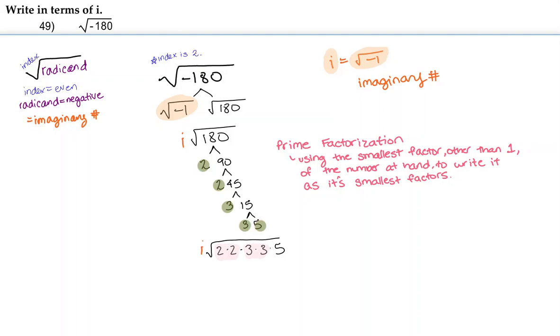We're going to take out a 2, and then we're going to take out a 3, and then we're left inside of the square root of 5. And then we're going to bring down our i.